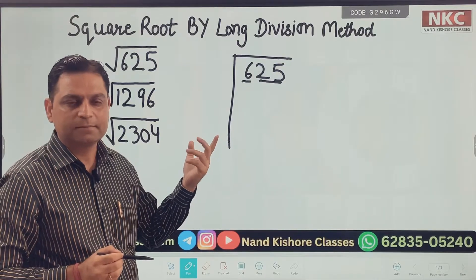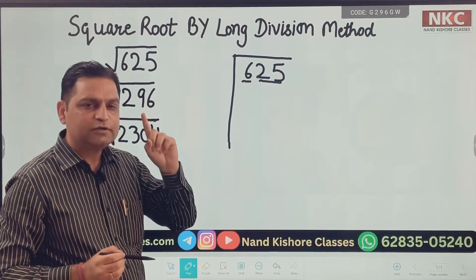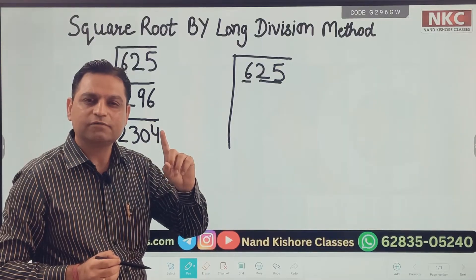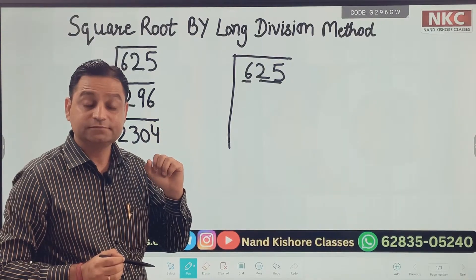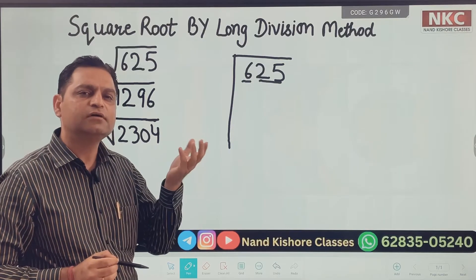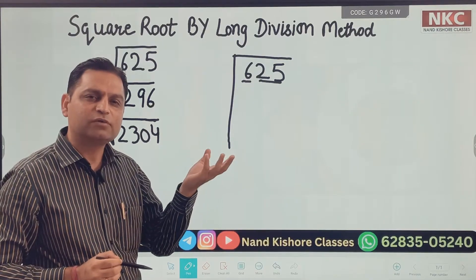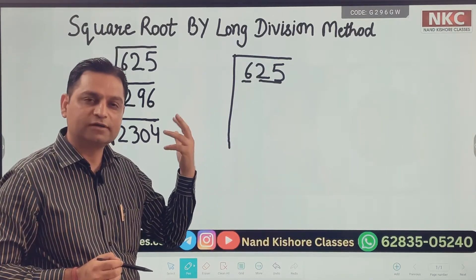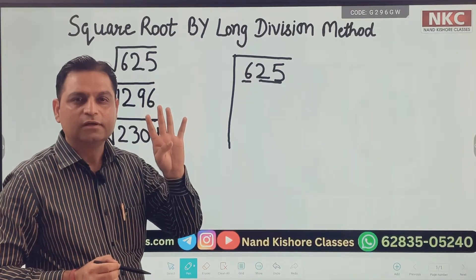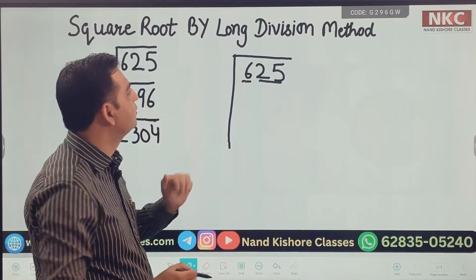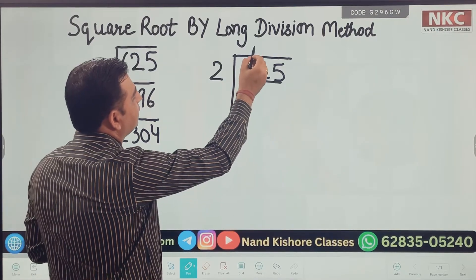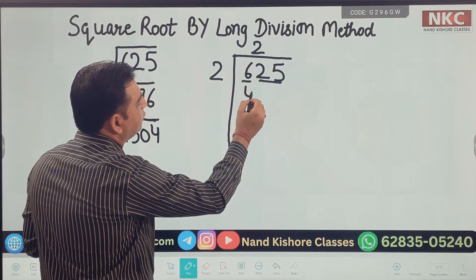We need to start from the first pair. You should think: is this 6 a perfect square? The answer is no, this is not a perfect square. Then which is the perfect square smaller than 6? It is 4. If 4 is a perfect square, what I am going to do — I will divide. Multiply 2 with 2 and we will get 4.